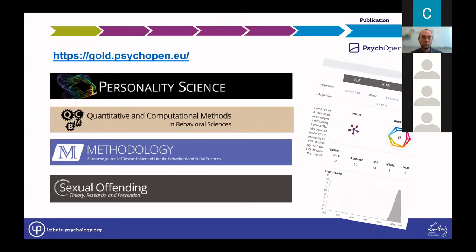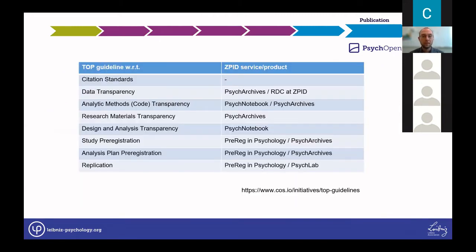With regard to integrating open practices into journal operations, ZPID and editorial boards agree on implementing the Transparency and Openness Promotion (TOP) guidelines, which address eight specific fields where journal publication can be transparent. ZPID tries to support implementation of the guidelines at the highest possible level. That was a quick overview of our tools and services.